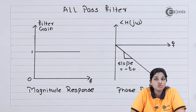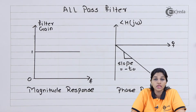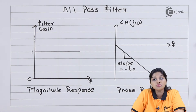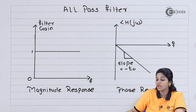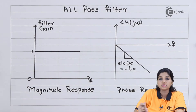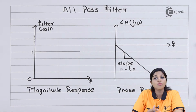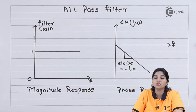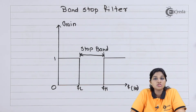As its name indicates, the all pass filter passes all the frequencies but it delays the signal with respect to the input frequency. Therefore, it is also called a delay filter. The frequency response, considering both magnitude and phase response, shows that the gain of all pass filter is always equal to 1. Moving to the next filter, that is the band stop filter, which is considered as the complement of the band pass filter.